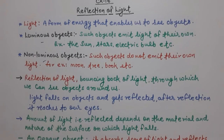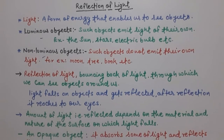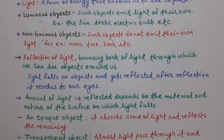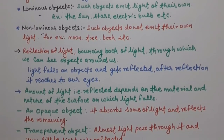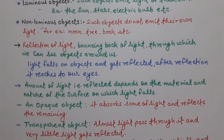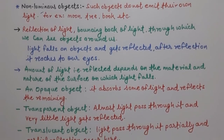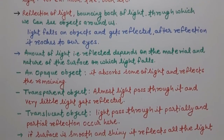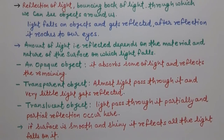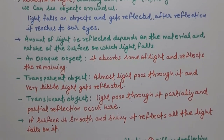In this topic we will learn about various types of objects regarding how much light they reflect or absorb. First, opaque objects — they absorb very little amount of light and reflect almost all of the light, so more light is reflected.